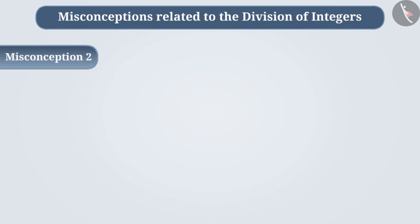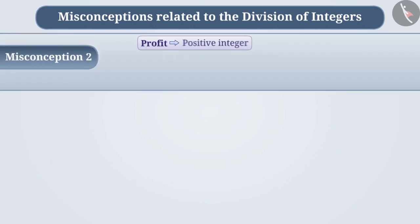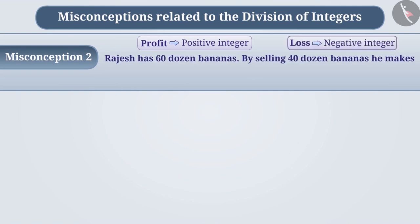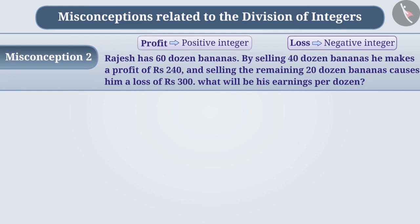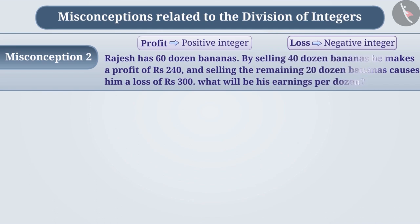Misconception 2. Suppose we represent profit as a positive integer and loss as a negative integer. Based on this, find out the answer to the following. Rajesh has 60 dozen bananas. By selling 40 dozen bananas, he makes a profit of Rs. 240. And by selling the remaining 20 dozen bananas, he incurs a loss of Rs. 300. What will be his earnings per dozen?